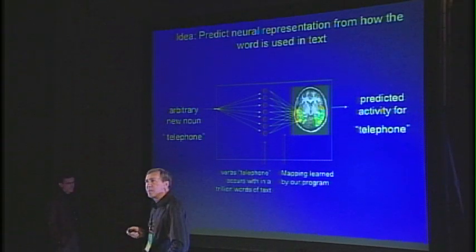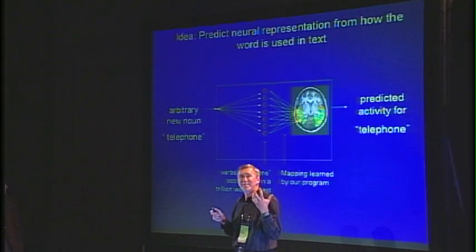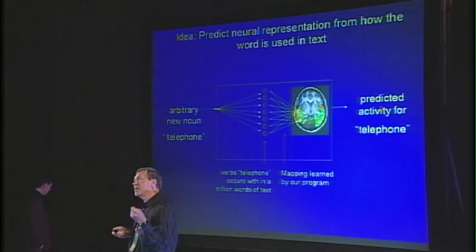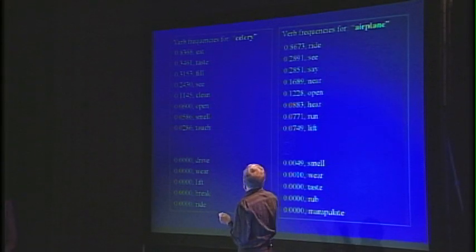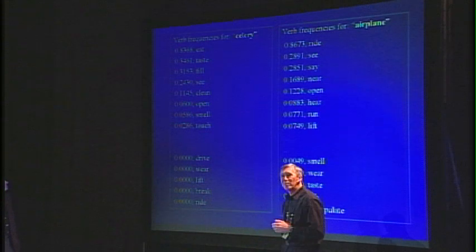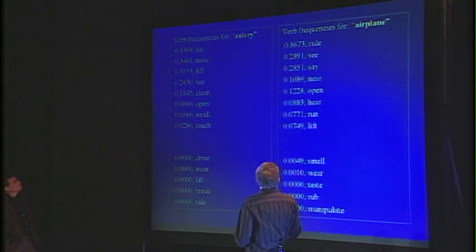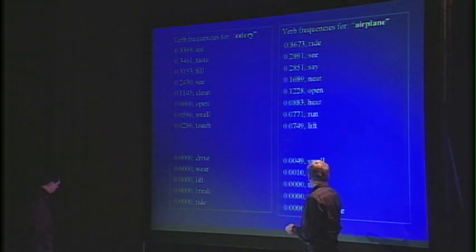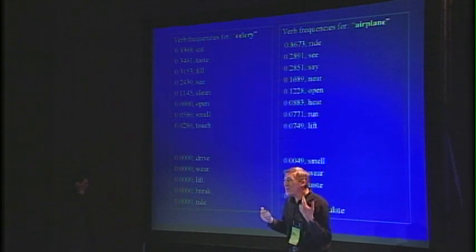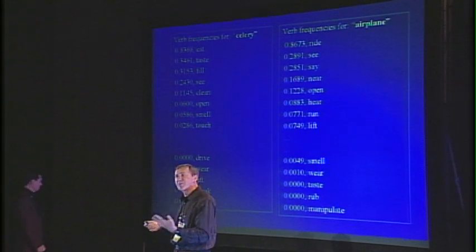The way it works is in two steps. First, it looks up in a trillion words of text what is the meaning of the token telephone, and it captures the meaning by how often telephone co-occurs with different verbs. Then from that it predicts the neural activity. For example, if we give it the word celery and the word airplane: eat is a commonly co-occurring word with celery, whereas ride doesn't occur often with it. On the other hand, airplane occurs a lot with ride. These statistical signatures of how people use words capture the meaning.